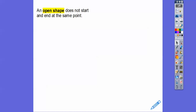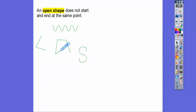An open shape doesn't have an inside and an outside, and it does not start and stop at the same endpoint. They start and end at different points. There's no inside or outside. Something like an angle — there's really no inside or outside. If you start a shape here and go around, and it doesn't end where you started, there's an open space. That's why it's called an open shape.